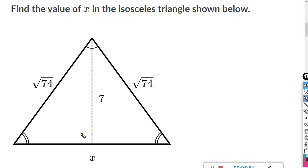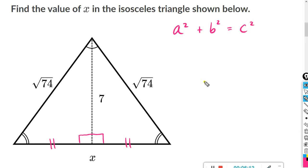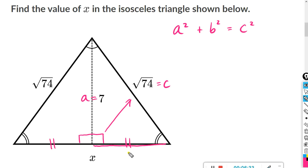Start by labeling your triangle — label the right angles down here and label these two sides congruent. Using the Pythagorean theorem, label the sides: across from your right angle that side is always C. For the other sides it doesn't matter which is A or B, so I'll let this side length be A — that's a 7. And this side length right here, I'll label it B.